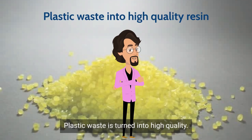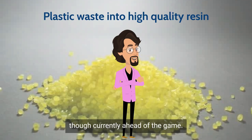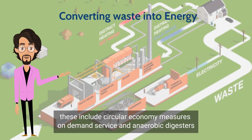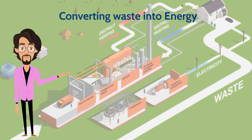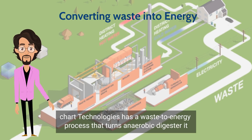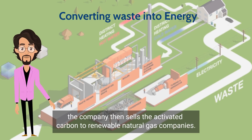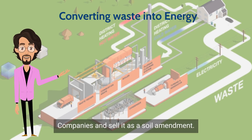Ecological and economically efficient plastic waste is turned into high-quality resin. The process emits less greenhouse gas than is emitted when making prime resin. Circular economy measures include purchasing wasted food's energy. Technologies will soon be able to treat food waste on site. Char Technologies has a waste-to-energy process that turns anaerobic digestate into activated carbon. The company then sells the activated carbon to renewable natural gas companies, and then buys back the spent activated carbon from those natural gas companies to sell it as a soil amendment.